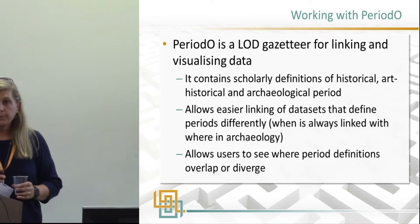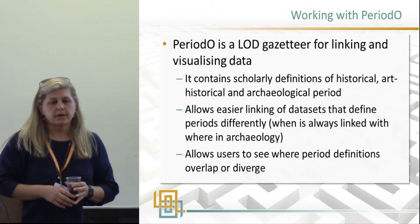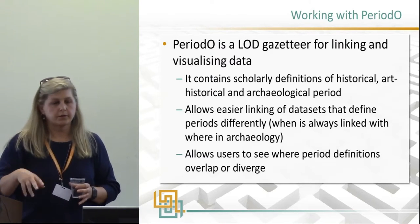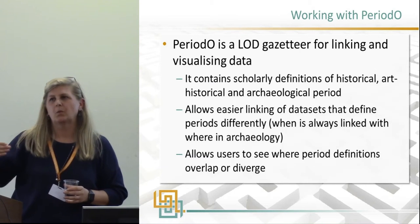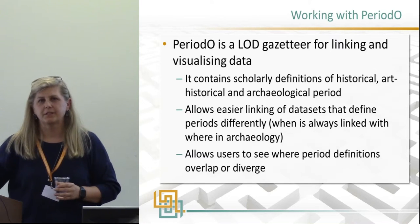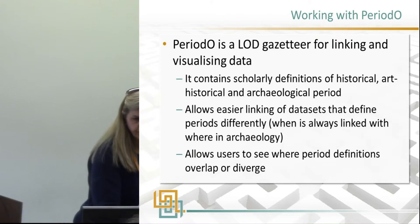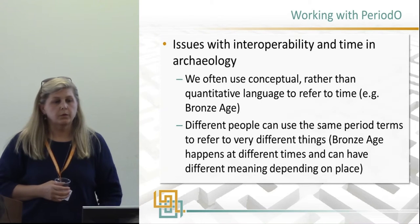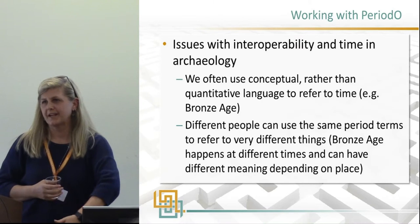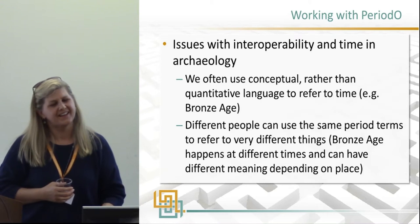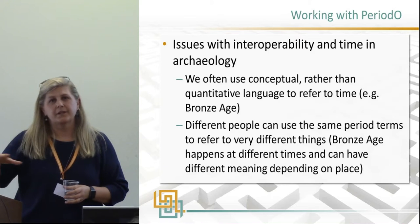Moving on to PeriodO: PeriodO is a linked open data gazetteer for linking and visualizing data. It contains scholarly definitions of different archaeological periods and allows things to be linked more easily. As we know, 'when' is always linked with 'where' in archaeology, which is why time is so incredibly difficult to deal with in linked data. It's very transparent and allows users to see where period definitions overlap or diverge. Some of the issues PeriodO is trying to deal with: archaeologists use conceptual rather than quantitative language to refer to times — we say 'Bronze Age' rather than particular dates — and different people can use the same period terms to refer to very different things depending on the country.